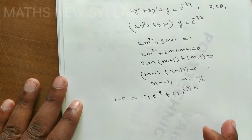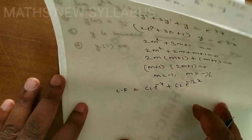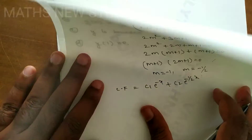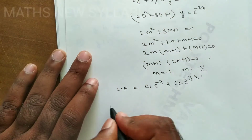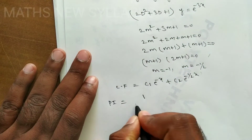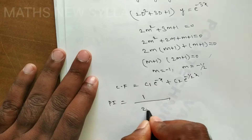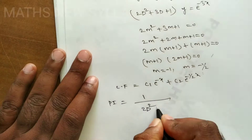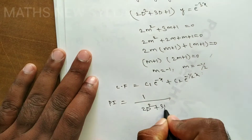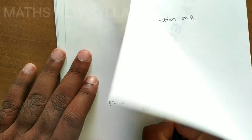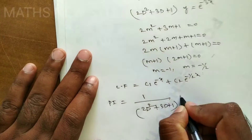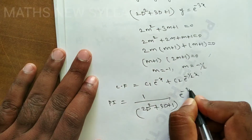Now, the particular integral is PI = 1/(2D² + 3D + 1) · e^(-3x). Substituting D = -3: 1/(2·9 + 3·(-3) + 1) · e^(-3x) = 1/(18 - 9 + 1) · e^(-3x) = e^(-3x)/10.